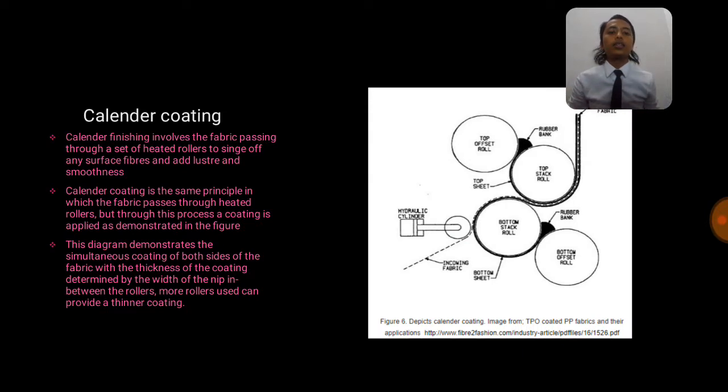And lastly is the calendar coating. Calendar finishing involves the fabric passing through a set of heat rollers to singe off any surface fibers and add luster and smoothness. Calendar coating is the same principle in which the fabric passes through the heat rollers, but through this process a coating is applied as demonstrated in the figure besides. This diagram demonstrates the simultaneous coating of both sides of the fabric with the thickness of the coating determined by the width of the nip between the rollers. More rollers used can provide a thinner coating.